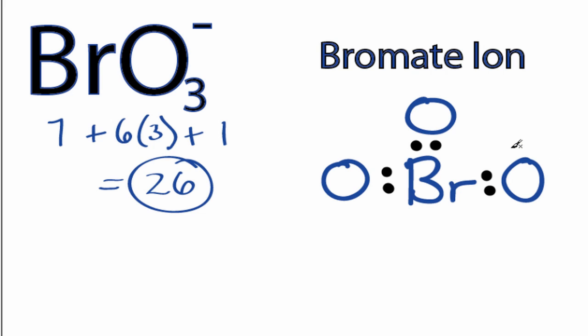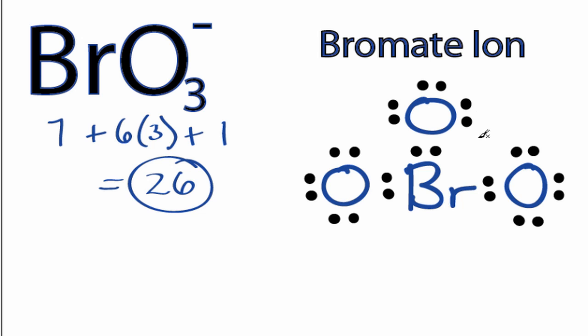And we'll go around the oxygens and fill out their octets, 8, 10, 24, and then back to the Bromine, 26. We've used all the valence electrons, and we can see that each of the atoms has 8 valence electrons, so the octets are full for all of the atoms.